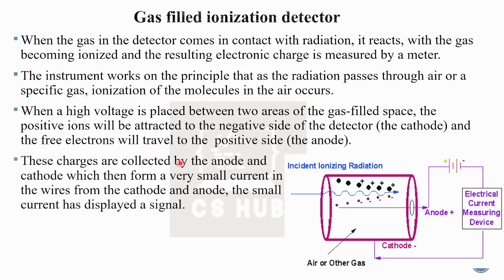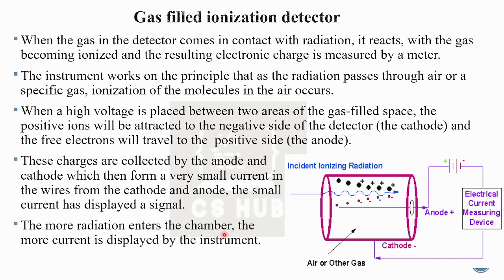These charges are collected by the anode and cathode, which then form a very small current in the wires. This small current is displayed as a signal. The more radiation enters the chamber, the more current is displayed by the instrument. This is the ionization chamber.